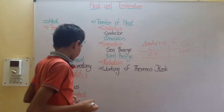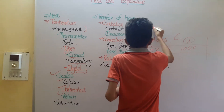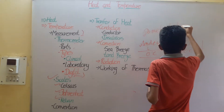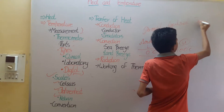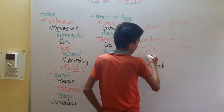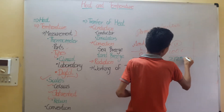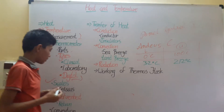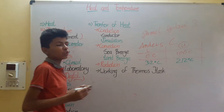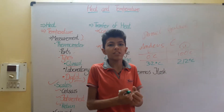100 degrees Celsius is the boiling water temperature. Then Fahrenheit — in the Fahrenheit scale, the lowest temperature is 32 degrees Fahrenheit and the highest temperature is 212 degrees Fahrenheit. Then we have Kelvin. Kelvin is the standard unit of all the scales. Absolute zero is the lowest temperature in our universe.